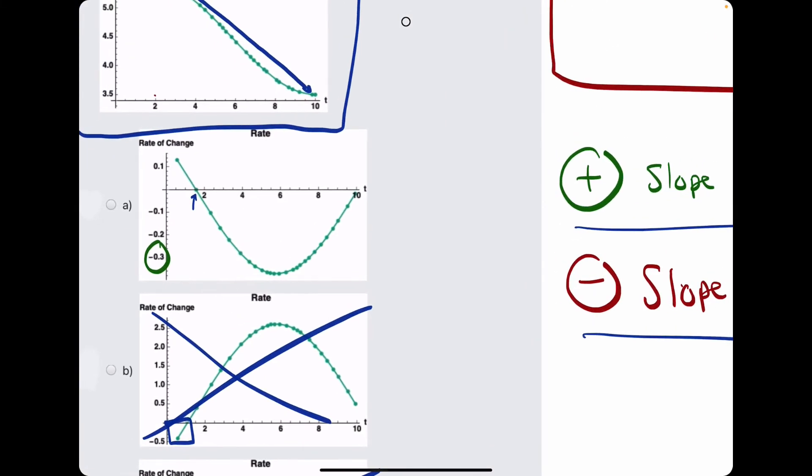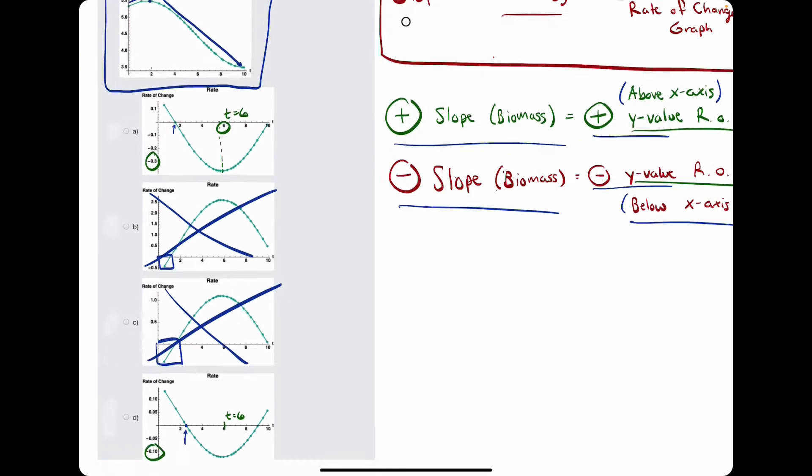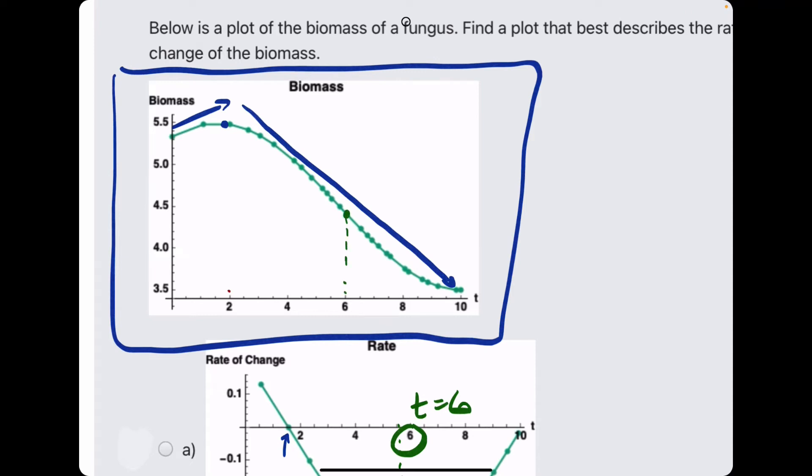So, I'm thinking if we can estimate the slope, say at time 6, estimate the slope at time 6, not on these graphs, but on the original graph. Can we estimate the slope at this point, for example, at time 6?